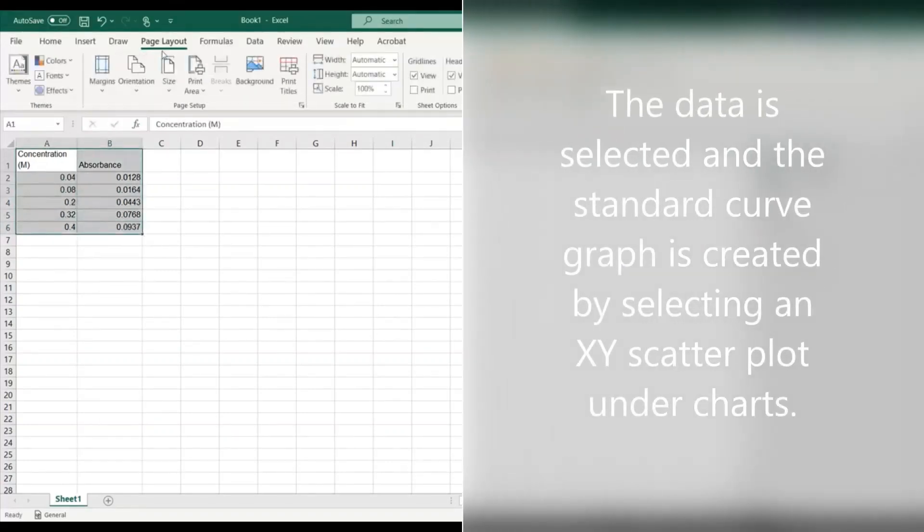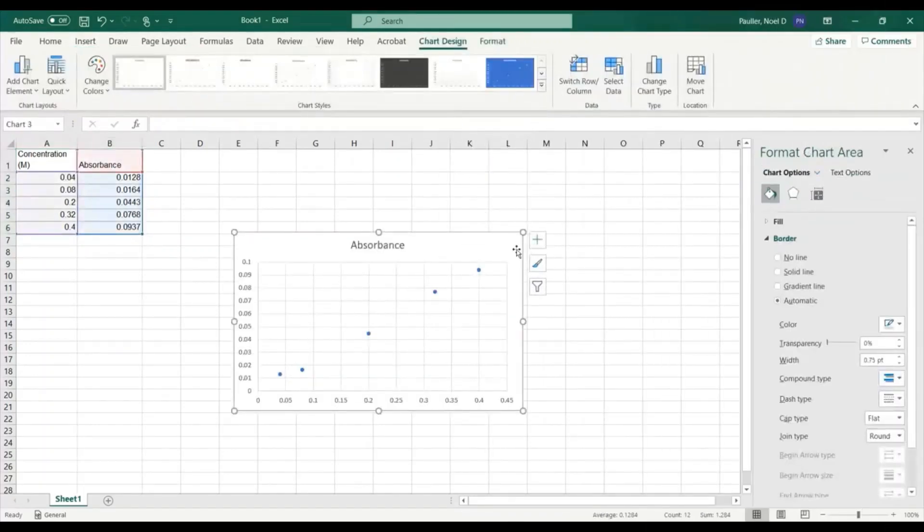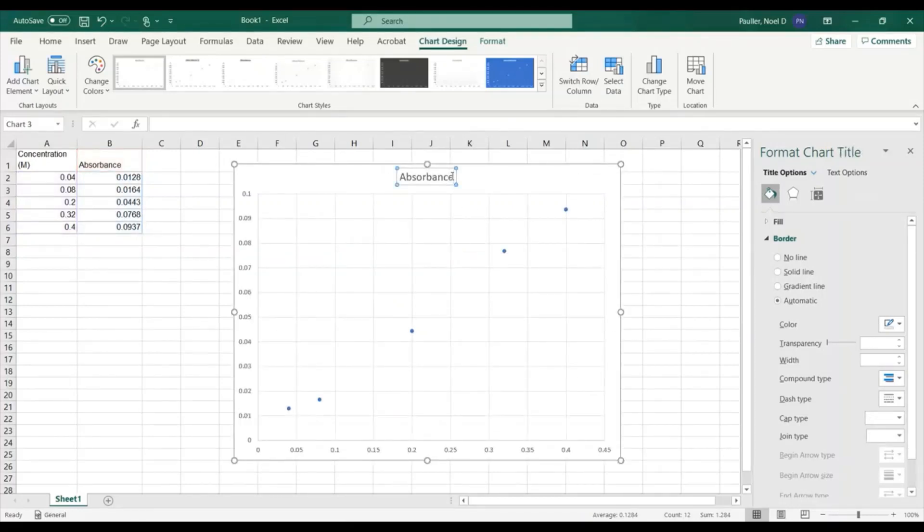So I'm going to click and highlight my data and then I will insert a chart. I want to do an xy scatter plot. Here you can see that we're able to resize the graph and I can change the title if I want to do that.